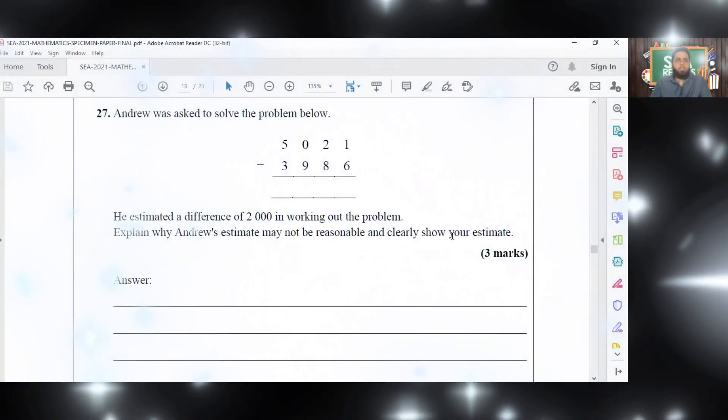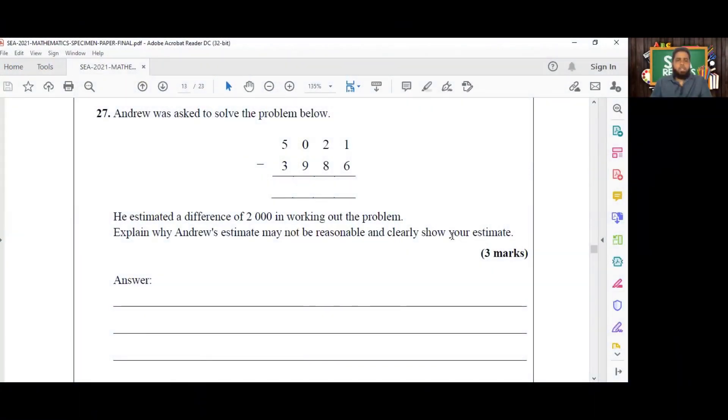We're now on number 27. Andrew was asked to solve the problem below: 5,021 subtract 3,986. He estimated a difference of 2,000 in working on the problem. Explain why Andrew's estimate may not be reasonable and clearly show your estimate.